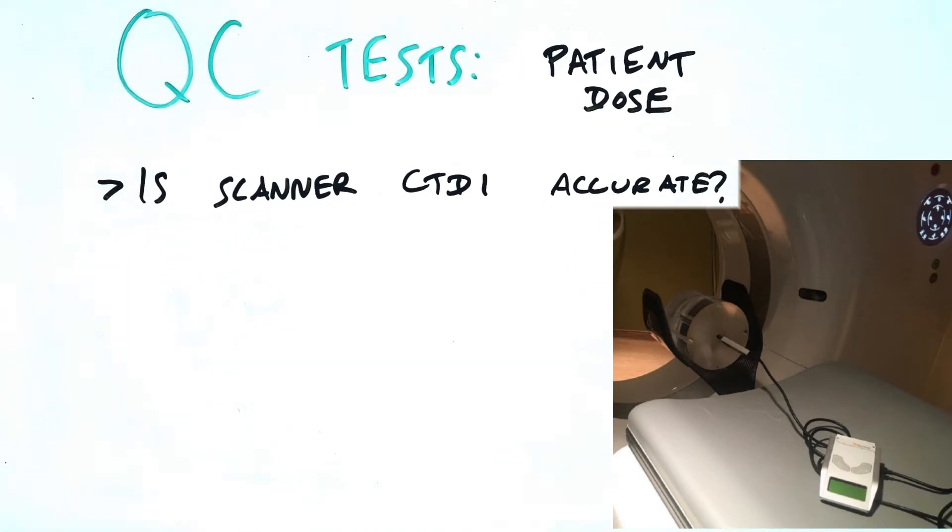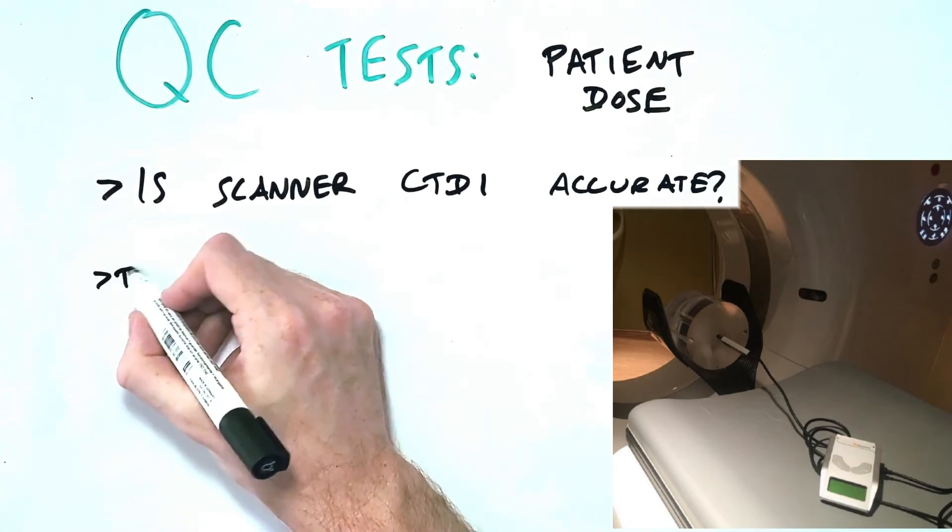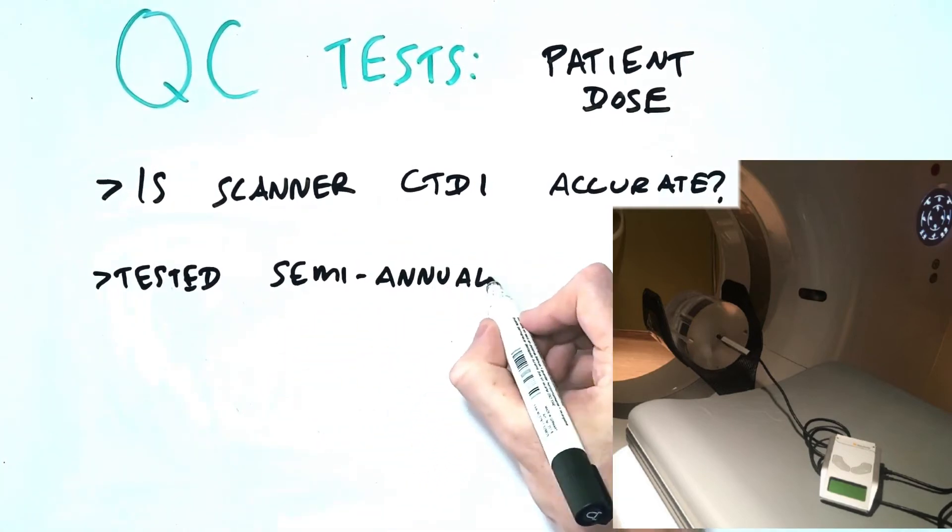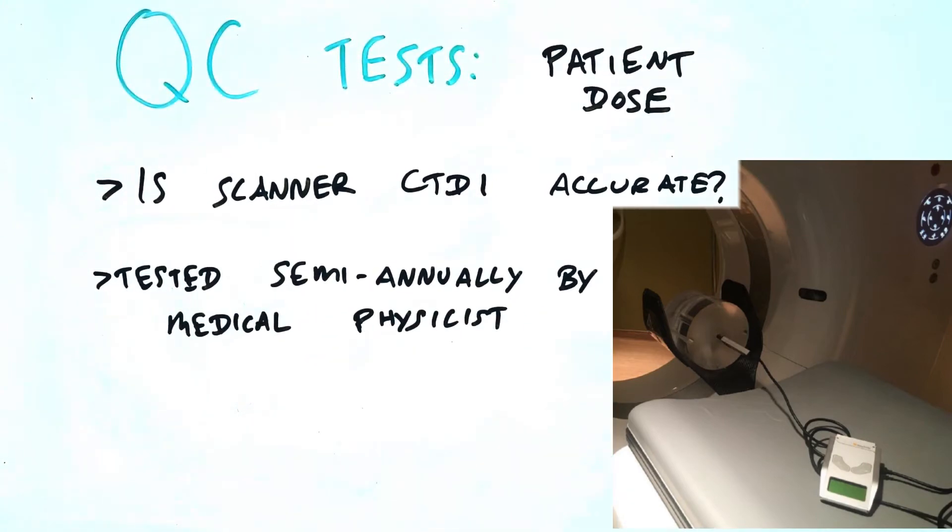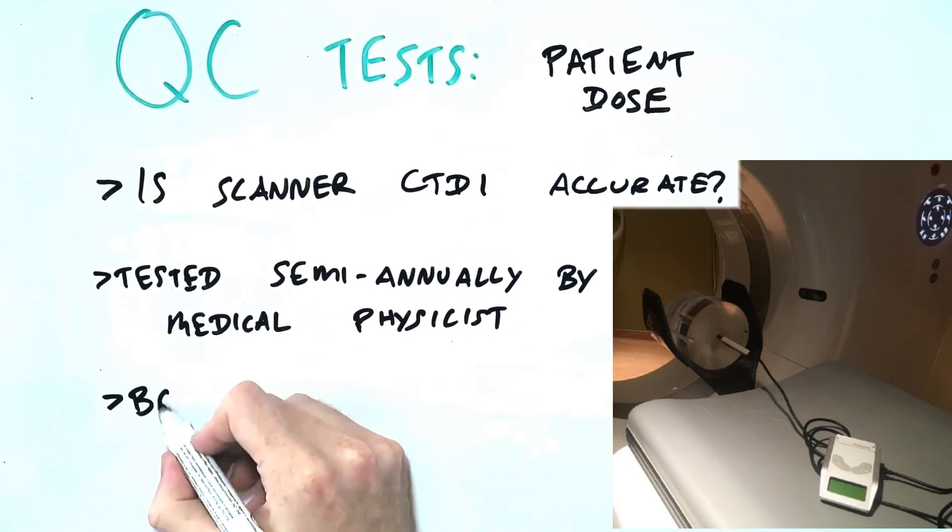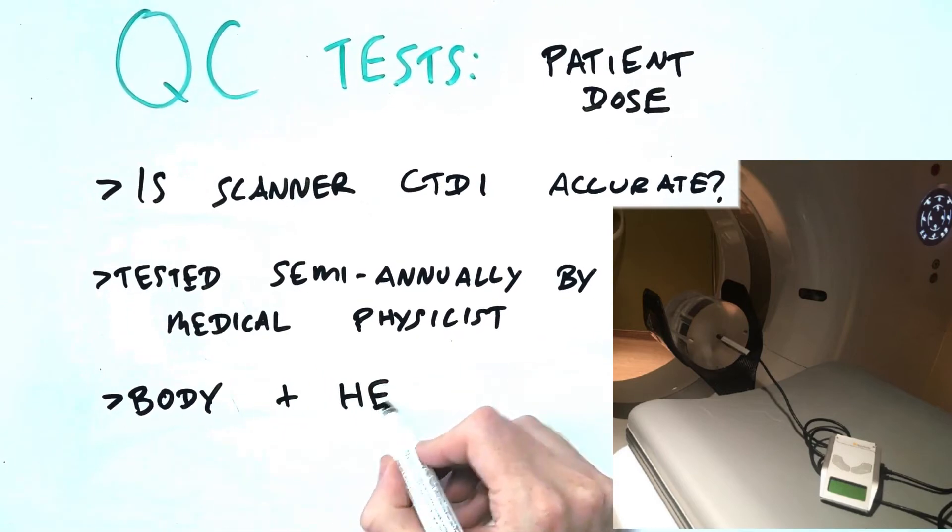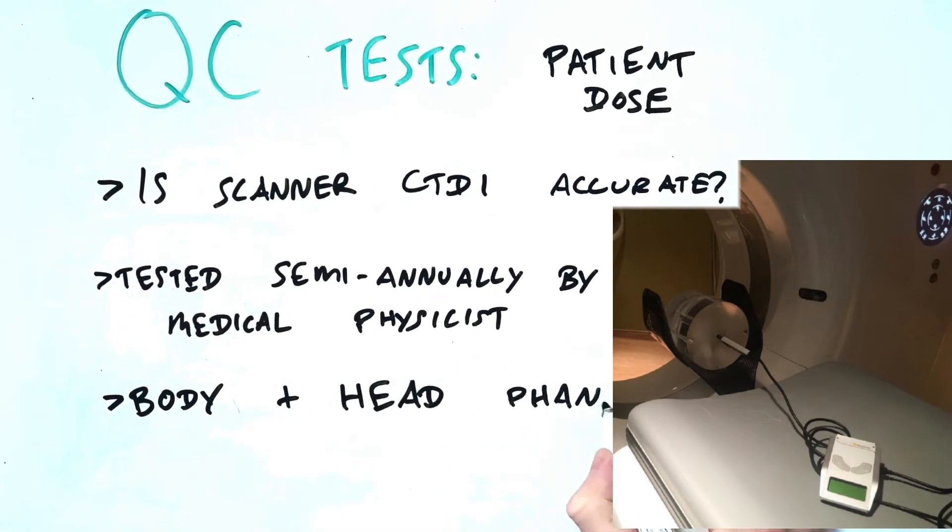As we know, dosimetry is a complex science and it's not always easy to get a true idea of the dose delivered to a patient based solely on the CTDI indicated by the scanner. However, testing this regularly is a good way to ensure that the CTDI displayed is at least somewhat of an accurate representation of what the patient actually received. This should be tested semi-annually by a medical physicist using both a body and head-sized phantom.